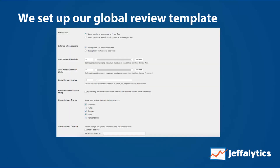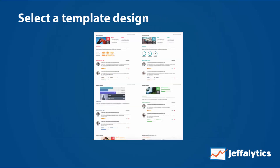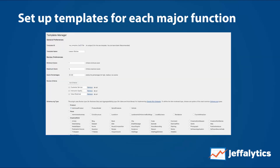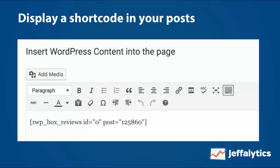Here's how it works. First, we set up our global review template within WordPress. We set what our rating system is, whether or not we need to moderate it, and all kinds of different configuration options. We then choose a template design — most templates look pretty similar but there is some variation. I chose the most simple one because we're just doing one criteria: either you liked the course or you didn't. Finally, you display a shortcode in your posts, pages, or anywhere you want — you pop it right in and it starts displaying on your site.